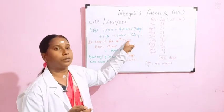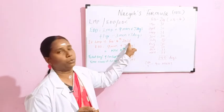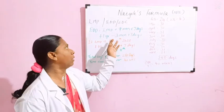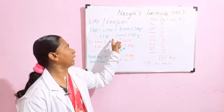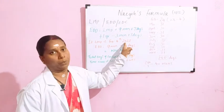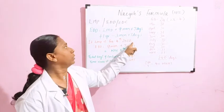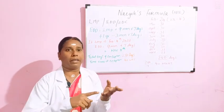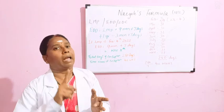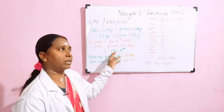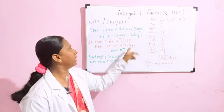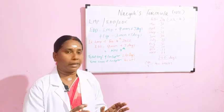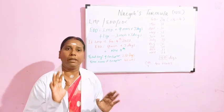For February 2022 as the LMP, to find the EDD you add 1 year to get 2023, then subtract 3 months from February: going back — January, December, and November. November comes again. Then you add 7 days to the 4th to get November 11th. With either of the formulas, you will get November 11th as the EDD.